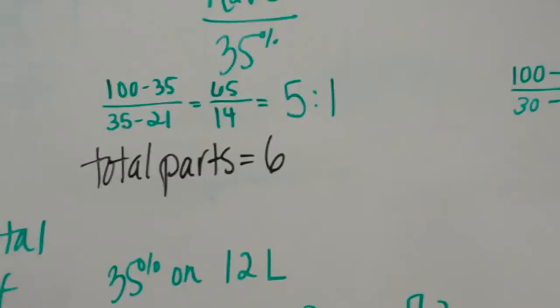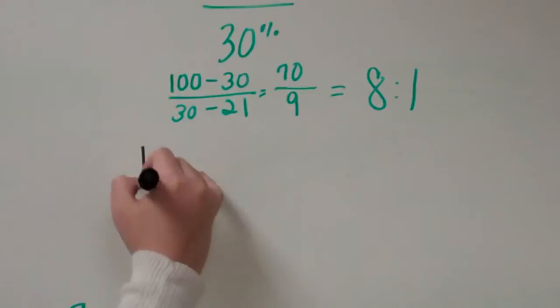Moving on to the 30%, you do the exact same thing. You add your air and your oxygen ratio together. So your total parts for 30% is 9.